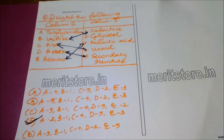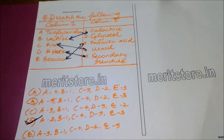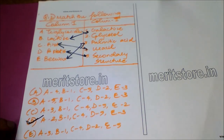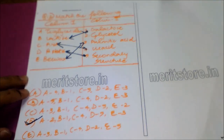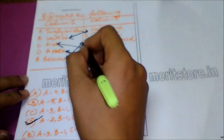The next question is: match the following, where Column 1 includes triglycerides, lactose, RNA, beta-pleated sheets, and wax; Column 2 includes galactose, glycerol, palmitic acid, uracil, and secondary structure. The correct answer is Option D, wherein glycerol matches with triglycerides, lactose with galactose, RNA consists of uracil, beta-pleated sheets are secondary structure, and wax can be matched with palmitic acid.